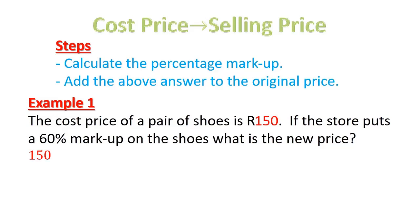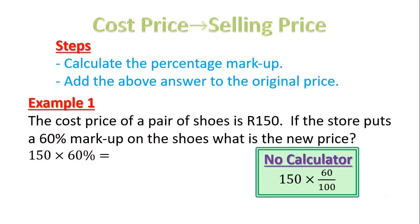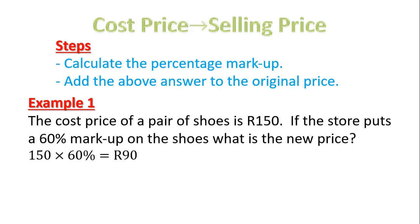Our first step is to calculate the percentage markup. To do this, we take 150, which is the cost price of the shoes, we times it by 60 percent because that's the markup percentage. If you can, put it in your calculator and press equals. Or if you don't have a calculator, what we need to do is take 150 and times it by 60 over 100. Then we can cancel and do our thing and eventually we should get R90.